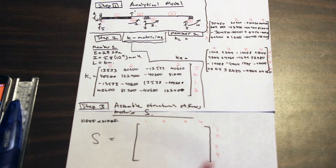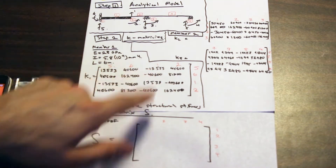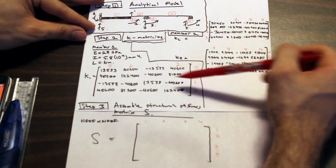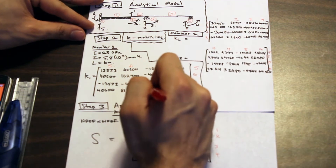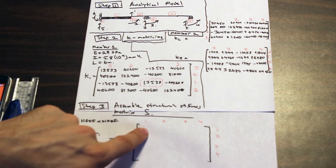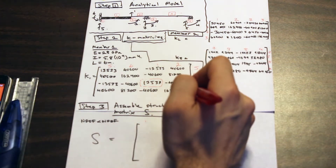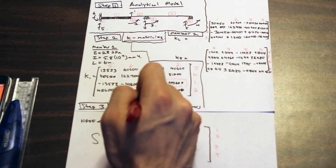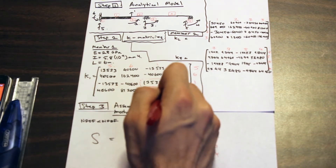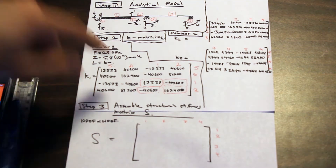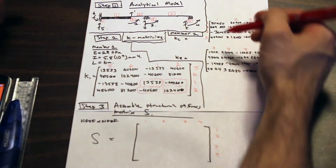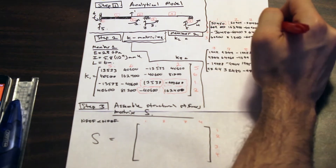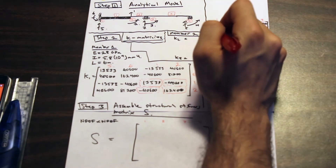Now we go to K1 and look for numbers to transfer. We have a (1,1) entry here — we take that number and put it in the (1,1) position of the S matrix. We also have a (2,1) entry. In a test situation, I like to go through each K matrix and highlight which numbers I want to take into the structural stiffness matrix.